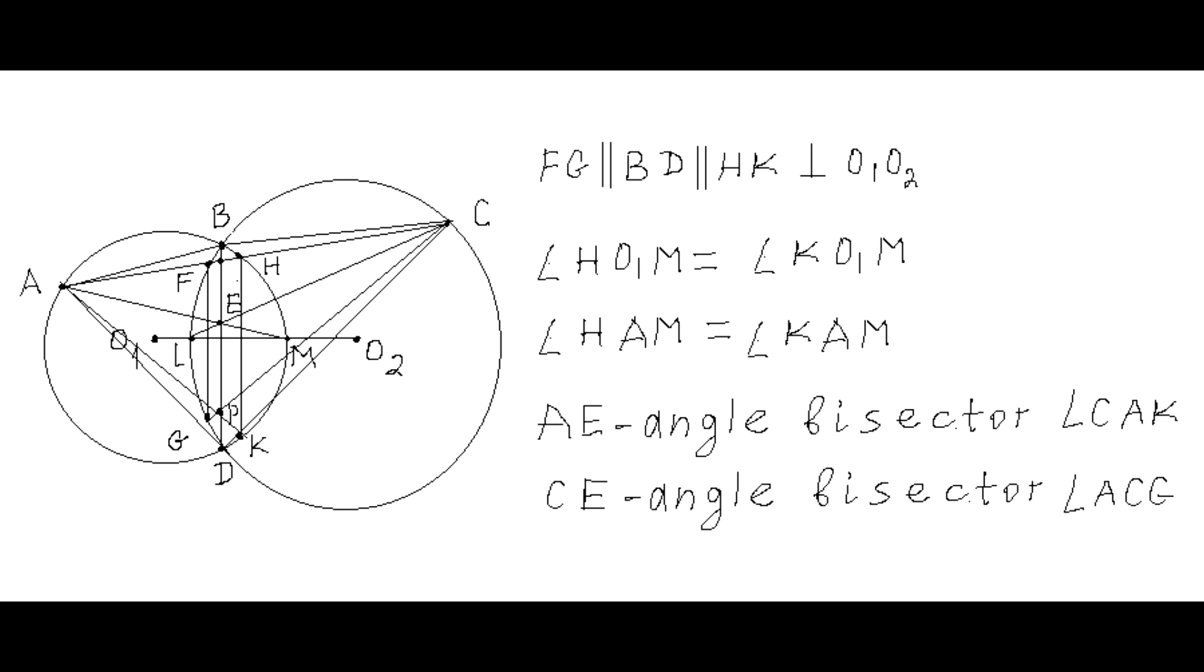over the central line O1-O2 and that point E of intersection of two angle bisectors AM and CL of their respective angles CAK and ACG lies on segment BD. In this video, we will provide the formal proof of this fact.